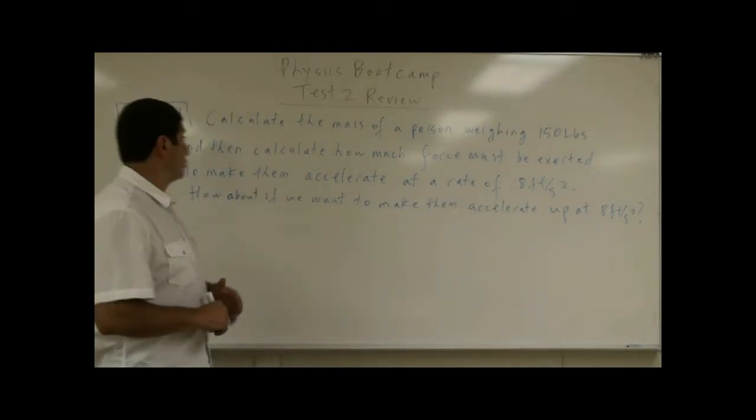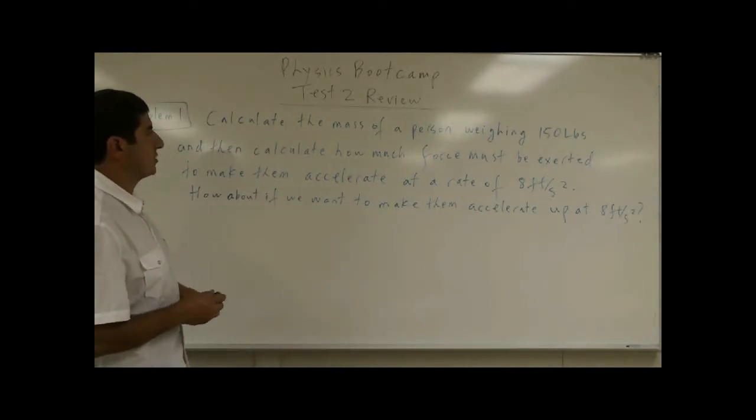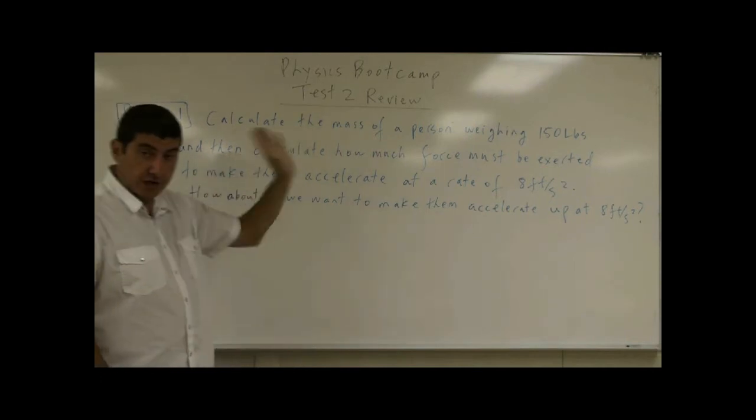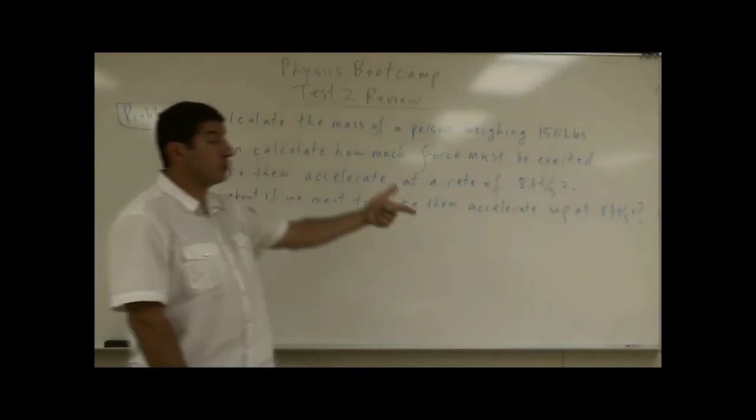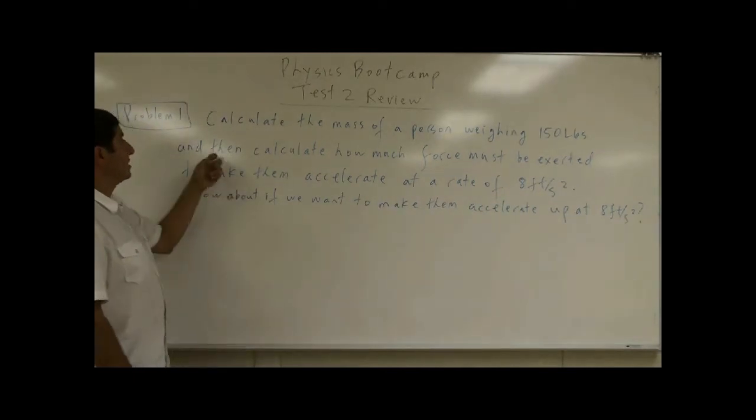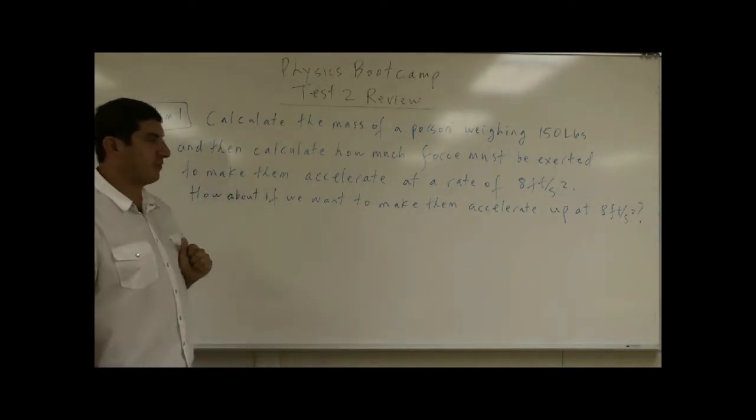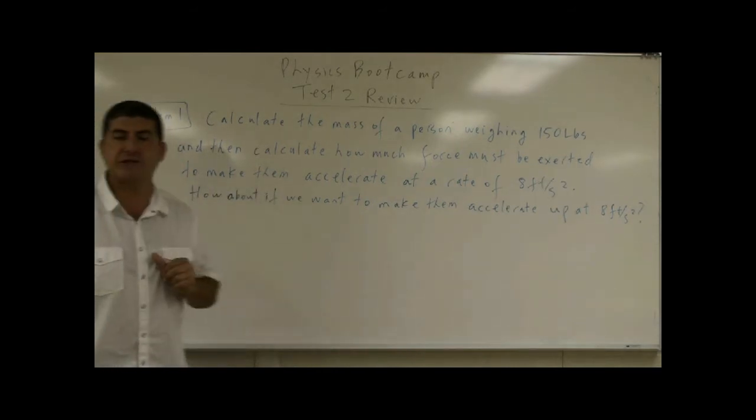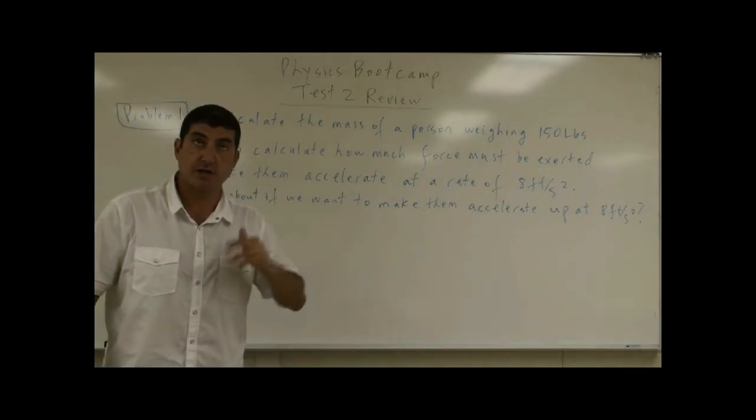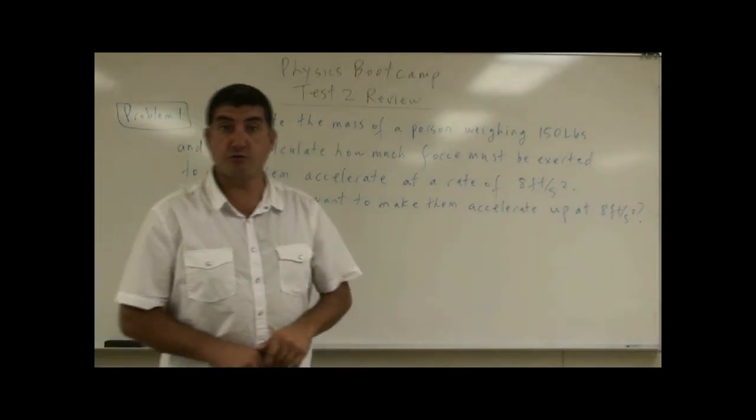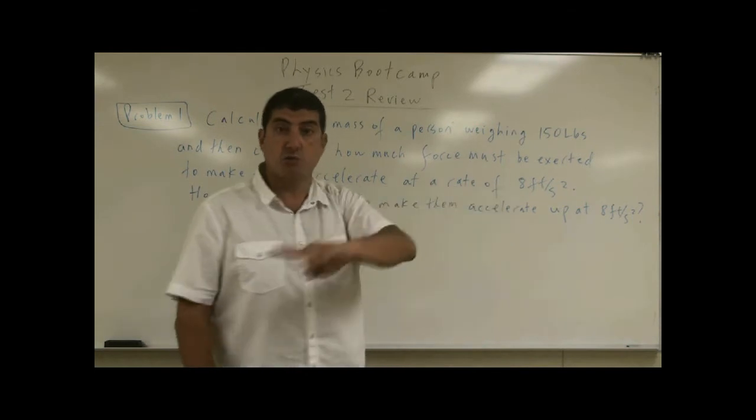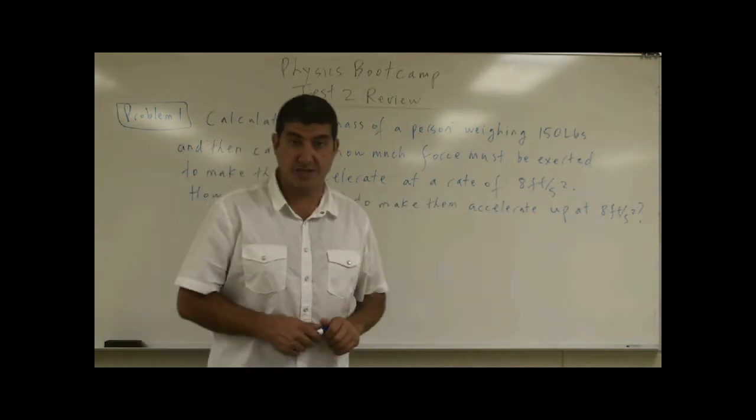This is problem one for the test to review. Calculate the mass of a person weighing 150 pounds. Remember, pounds is a unit of force in the British unit system, so we have to convert that to mass. Then it says calculate how much force must be exerted to make them accelerate at the rate of 8 feet per second squared. 32 feet per second squared is the acceleration of gravity in the British unit system, so 8 feet per second squared is one-fourth of the acceleration of gravity.